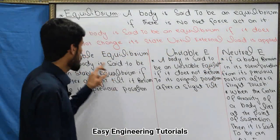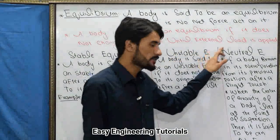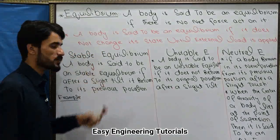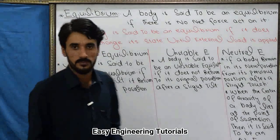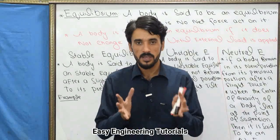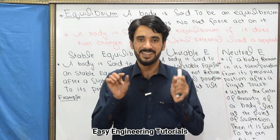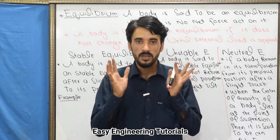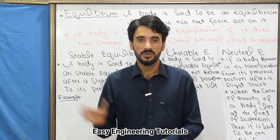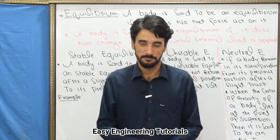So, what is stable, unstable, and neutral equilibrium? The first one is stable equilibrium. A body is said to be in stable equilibrium if, after a slight disturbance, it comes back to its previous position. This is called stable equilibrium.